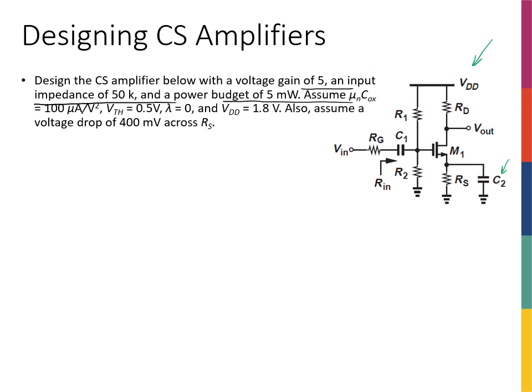When we say 'design this common source amplifier to have a given gain, input resistance, and power budget,' it means: find all the resistor values and the transistor geometry (W/L). This is an open-ended question — you and I might arrive at different answers. As long as both designs meet all requirements, both are correct. There's no single incorrect design, though one may be better than another.